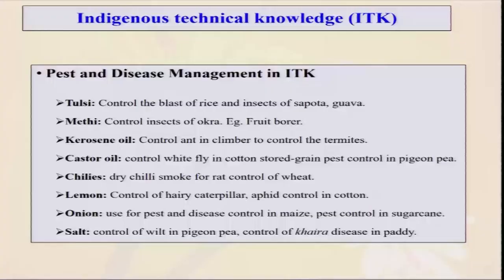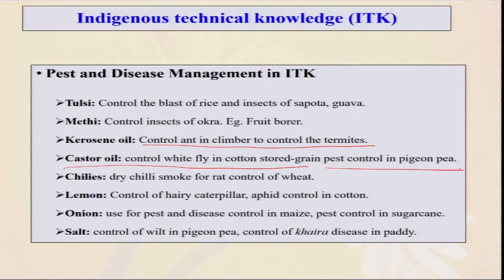For pest control using ITK: kerosene oil can control ants climbing up plants to control termites. Castor oil can control whitefly in stored cotton. There are also ginger extract and garlic extract, which are very effective, and we use this type of technology in organic farming. Whenever we collect some ITK, documentation is very much necessary. After documentation, you have to validate whether the technology is worthful or not. When it is documented and validated, it can be used for future application.